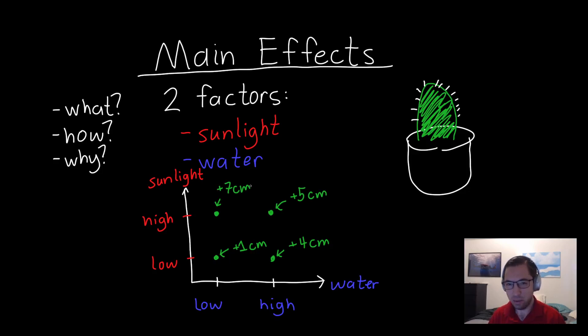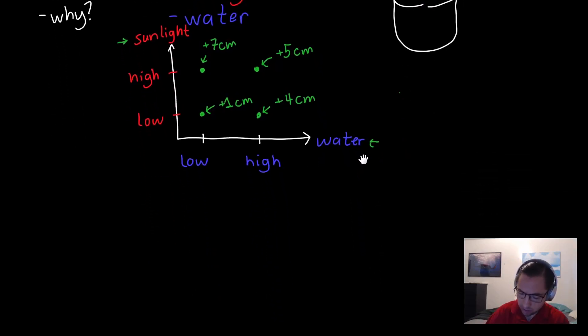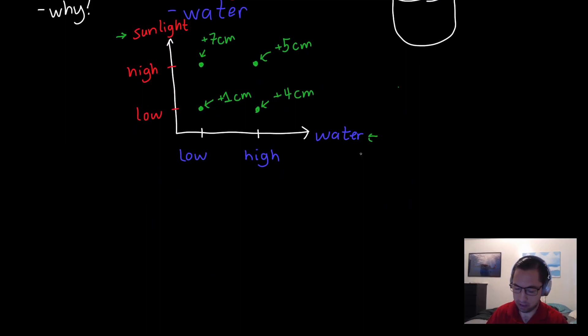So the question is, how do we make sense of this data in terms of the variables that we had, which were water and sunlight? How do we figure out which one, if either of these is helpful? Well, this is where main effects come in.